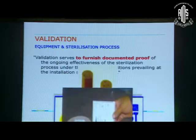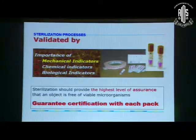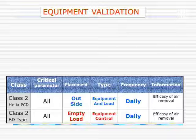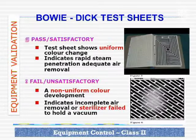Regarding validation — we have different methods. Simply putting in a sticker and saying it's been autoclaved is not sufficient. You need the Class 6 indicator. The Class 2 indicator is only to check whether proper vacuum has been created. One is the Bowie-Dick test — that will be shown in the video. If there is an air pocket, uniform discoloration will not take place; there will be patches.